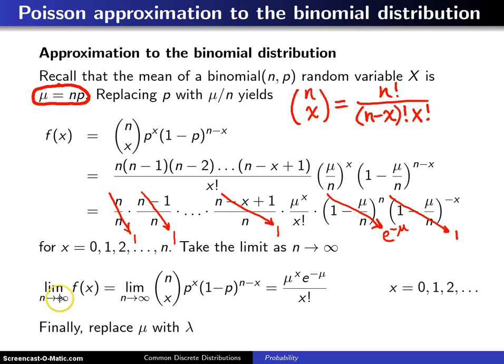When you put this all together, the limiting probability mass function of the binomial distribution turns out to be mu raised to the X power multiplied by E to the minus mu divided by X factorial. And that's for X equals 0, 1, 2, etc.